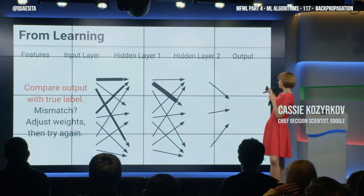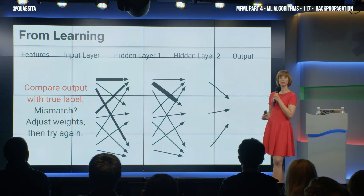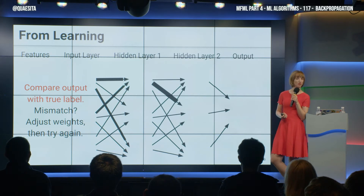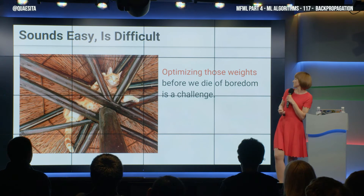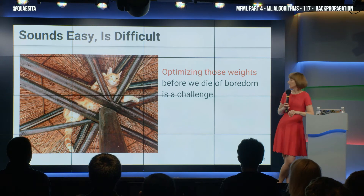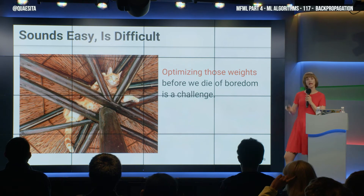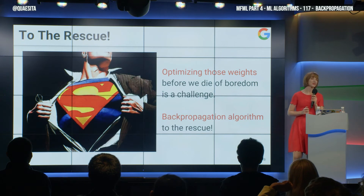You'll be comparing the output that you want with the output that you got. You wanted a 1, it gave you a 0. Which weight are we going to change, and in what order? Turns out that optimizing those weights before we die of boredom is actually a challenge, and doing this by hand is just not going to work. So we're stuck unless we have an optimization algorithm that can do it quickly — and that is what the backpropagation algorithm is all about.